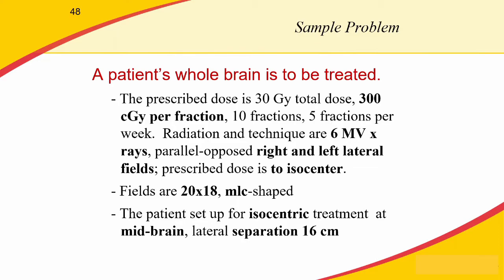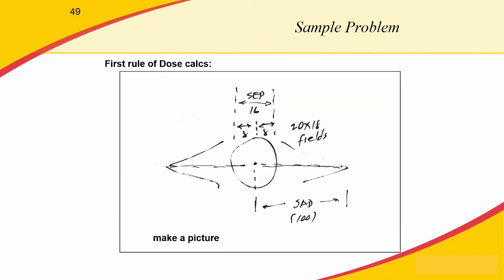That's a lot of information, so I always draw a picture — please forgive my lack of artistic skills. We draw our patient set up to 100 cm SAD using 20 by 18 rectangular fields. The lateral separation of the brain is 16 cm and we're calculating dose to midbrain. That means each beam penetrates 8 cm depth, so we want to calculate dose at 8 cm depth for each treatment field.